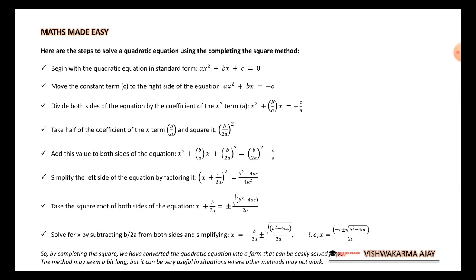Here are the steps broken down. First, write your quadratic equation and take the constant c to the other side (RHS), so the equation becomes ax² + bx = −c. Next, make sure the coefficient of x² is equal to 1. In this case it is a, so we divide the entire equation by a, giving x² + (b/a)x = −c/a.